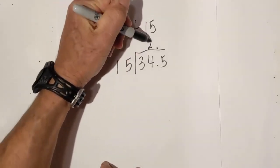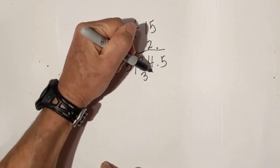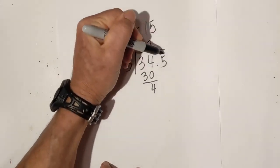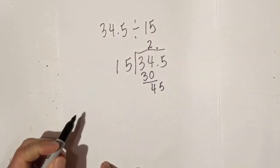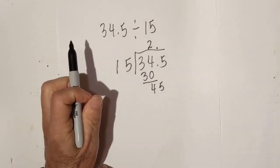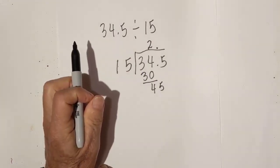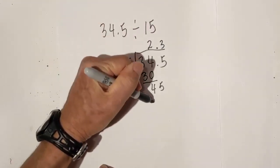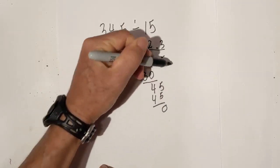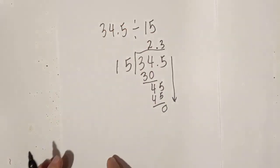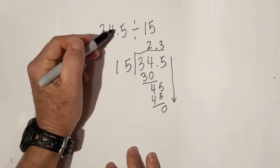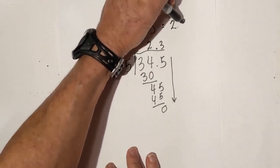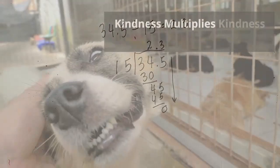That looks like 2. 2 times 15 is 30. Subtract and bring down — we get 45. 15 into 45 is 3. 3 times 15 is 45. We have zero, nothing else to bring down. So 34 and 5 tenths divided by 15 equals 2 and 3 tenths. Hope that helps you.